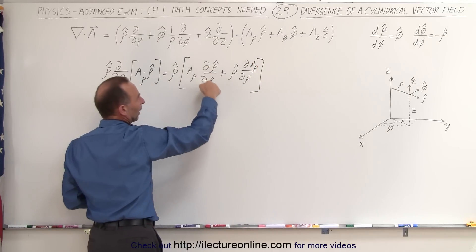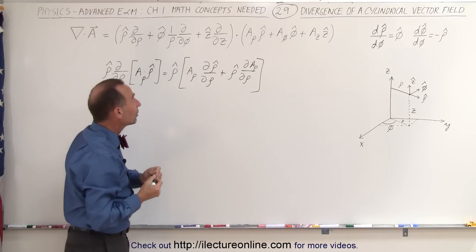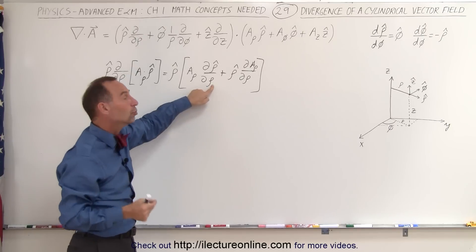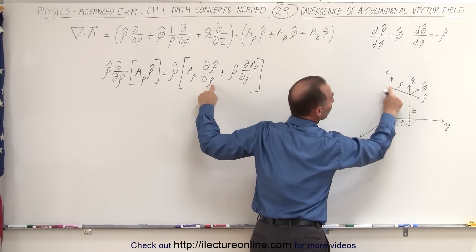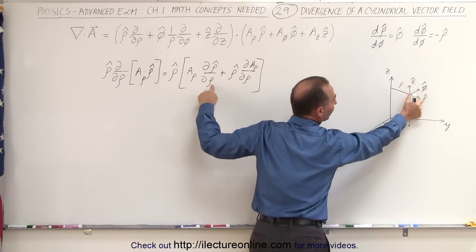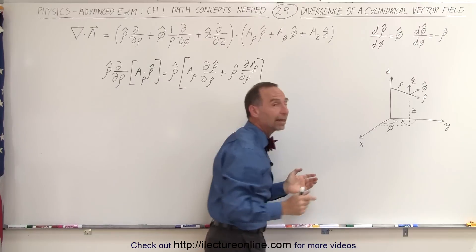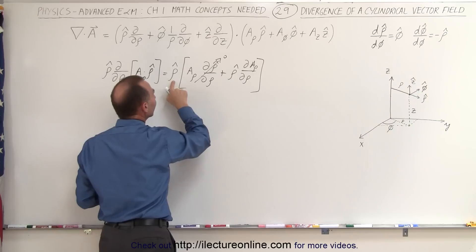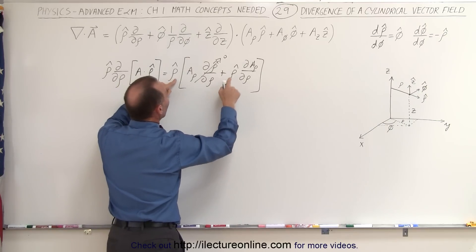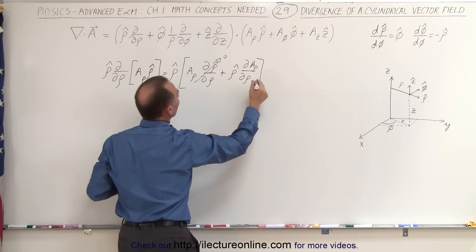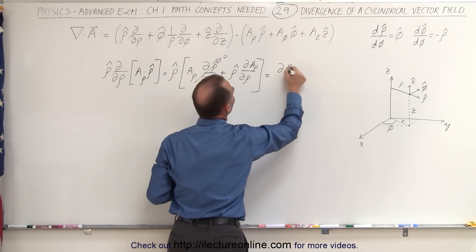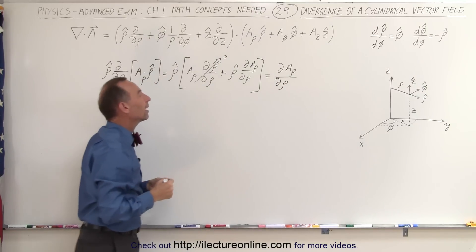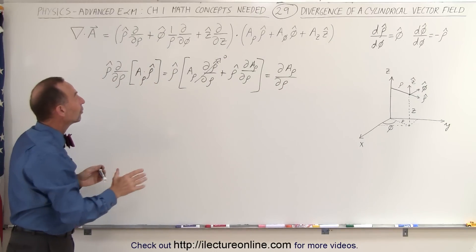Now look at this term: the partial of rho-hat with respect to rho — how much does the unit vector change when rho changes? If rho becomes longer that has no effect on the unit vector; it stays the same direction and length, so this term goes to zero. Then rho-hat dot rho-hat equals one, and the surviving term is simply the partial of A-sub-rho with respect to rho.